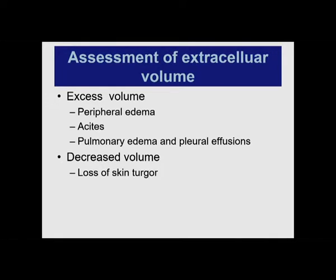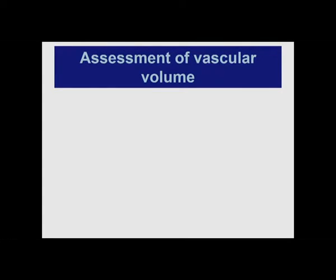Decreased volume in the extracellular space is tough — we do not really have good techniques. I use skin turgor, although it is heavily criticized in the literature. But if you follow this regularly, especially doing continuous renal replacement therapy, you can feel the change in turgor in the arm — squeezing the arm, feeling whether the skin hangs up or is nice and pliable. Loss of sweat in the armpit is a sign, but that is late and not easy. We really do not have good techniques and have to think about volume status on the low side. The thing we care most about is intravascular volume — but we really do not have good tools for this either.